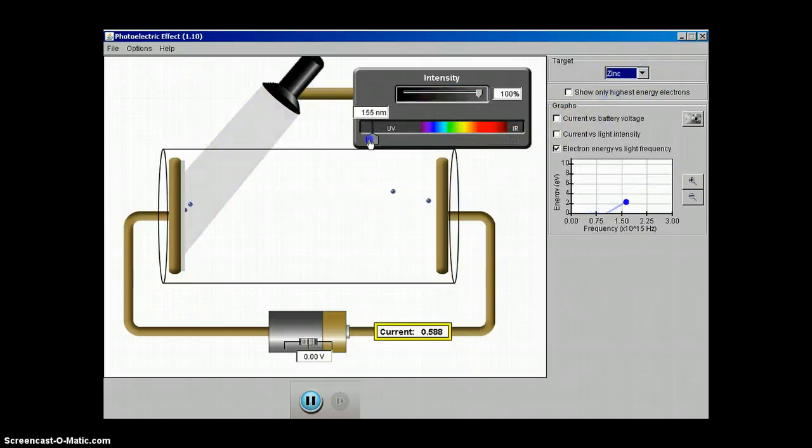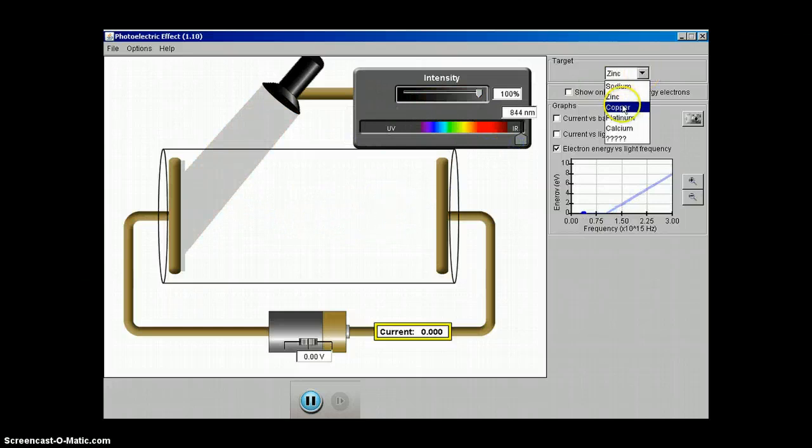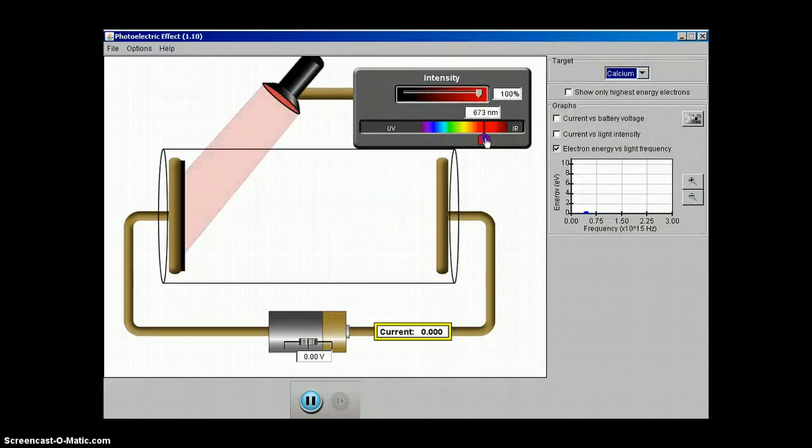There's a slope on sodium, there's a slope on zinc, there's a slope on copper. And not to beat it to death, let's just skip calcium. Pretty amazing find - all the slopes appear to be parallel to each other. So every single metal has the same slope on this energy versus frequency graph.